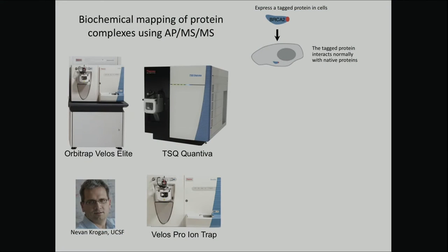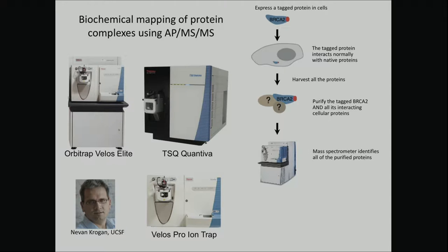Nevin Krogan at UCSF has been instrumental in developing technology to map protein-protein interactions, which he's now applying systematically to cancer. The idea behind AP-MS — affinity purification tandem mass spectrometry — is you tag a favorite protein. In cancer, you prioritize tagging proteins whose genes are frequently mutated in projects like the Cancer Genome Atlas. Having tagged it, you express that tag in relevant cell lines, pull down that protein with an antibody along with its interactors, and identify those interactors using mass spectrometry.